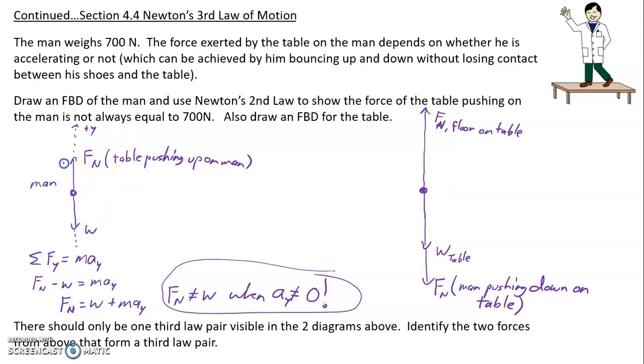However, we talked about this before. This force here and this force down here, those are a third law pair. The table pushes up on the man and the man pushes down on the table. These are a third law pair.